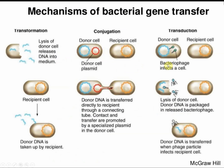In nature, plasmids can be transferred between closely related cells by conjugation, using a sex pilus or mating bridge to physically transfer plasmids. DNA can also be recombined by transformation, where cells take up naked DNA from the environment after a donor cell lyses. Transduction is another natural mechanism where viruses infect a host cell, and during packaging of new bacteriophages, some bacterial DNA inadvertently gets packaged and delivered to a new host cell where it can recombine.